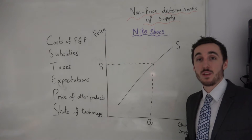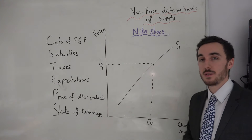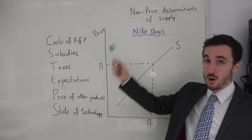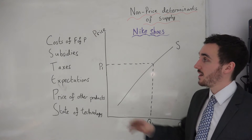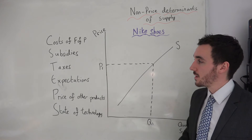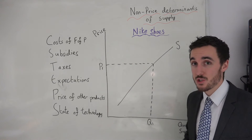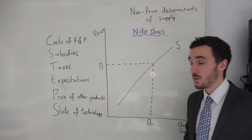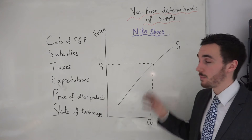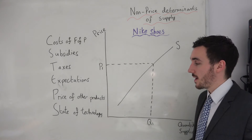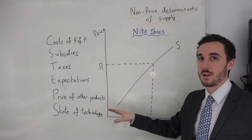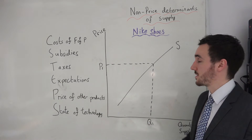I've written up the non-price determinants of supply, so let's go through those quickly. We have the costs of factors of production, government subsidies, government taxes, expectations from the firm, the price of other products that the firm could produce instead, and lastly the state of technology that the firm has access to.